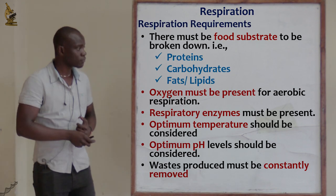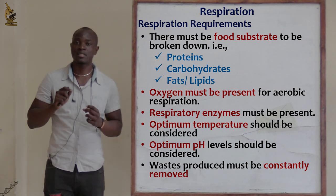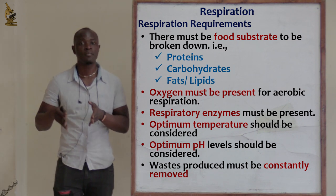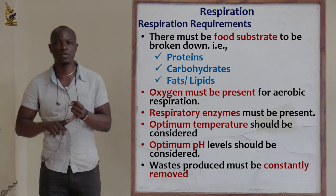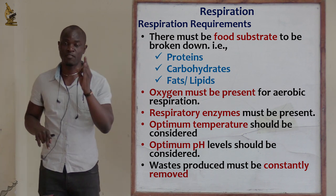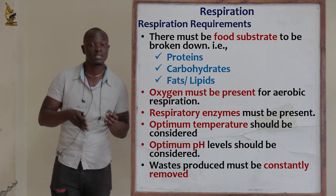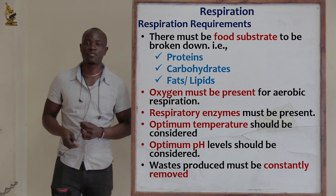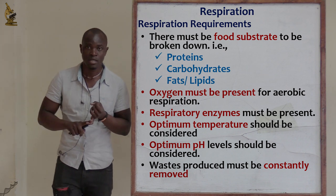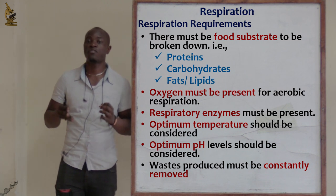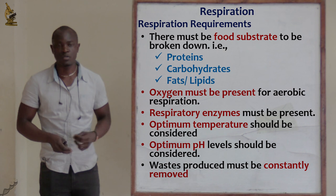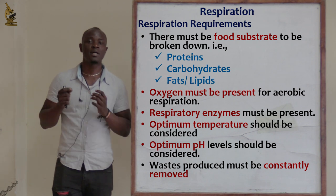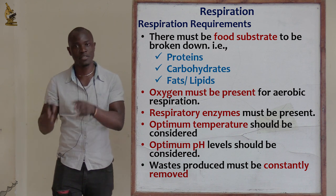For respiration to take place, the following must be present. First, cells must have food or the different respiratory substrates, including proteins, carbohydrates, or fats — the substrate that is broken down to release energy. Second, for aerobic respiration, oxygen must be present. Third, respiratory enzymes must be made available, as they are responsible for breaking down the food substrate with oxygen to produce energy.